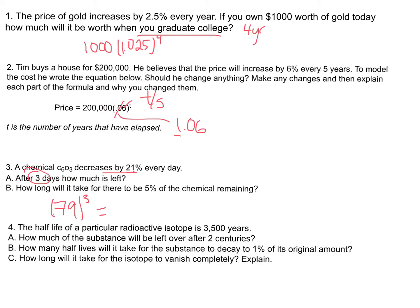For part B: how long will it take for there to be 5% of the chemical remaining? You know you started with some amount A, and to have 5% remaining you multiply by 0.05. So you're asking: 0.79 to what power X will give A times 0.05? You don't really need the A — you just need to solve for X. To do that, take the natural log of both sides. Make sure your answer makes sense in the context of the question before you write it out.